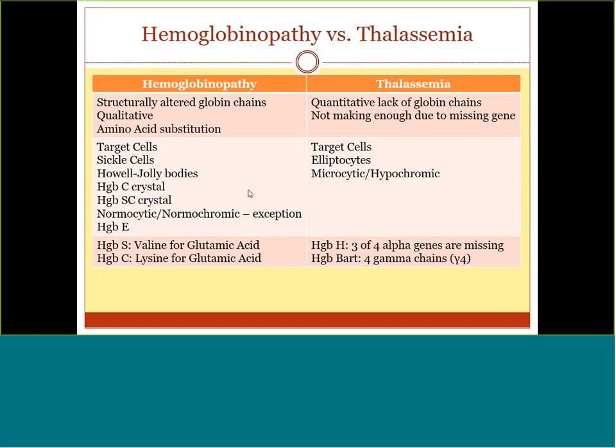The two amino acid substitutions to remember are hemoglobin S and hemoglobin C. Hemoglobin S is created when valine substitutes glutamic acid; hemoglobin C is created when lysine substitutes glutamic acid. Both occur on the beta chain at the sixth position. Go back to the original PowerPoint for anything else, like hemoglobin E details.